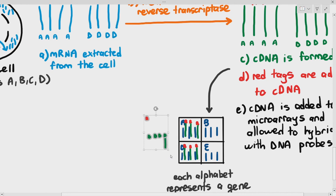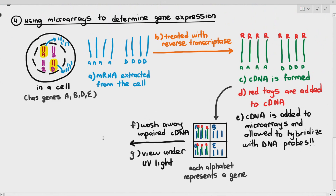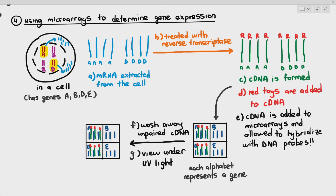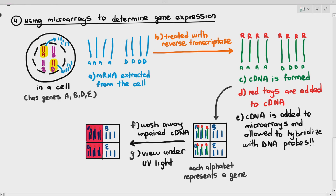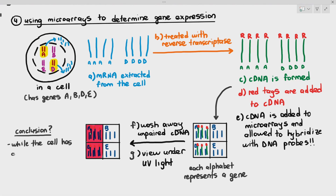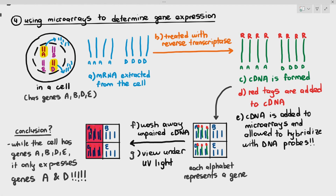After washing away unpaired cDNAs and viewing under UV light, only positions A and D are glowing. This tells us that while the cell has genes A, B, D, and E, it only expresses genes A and genes D.